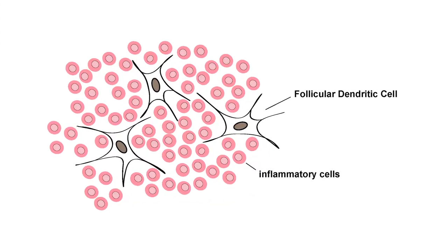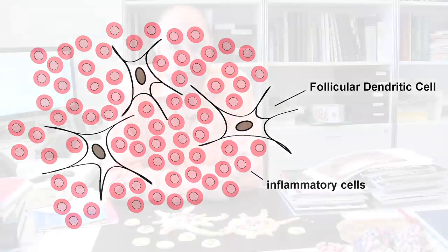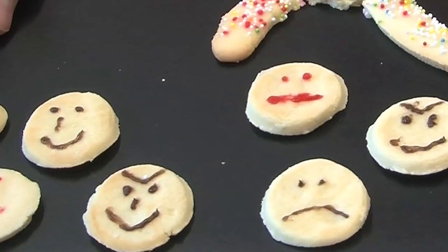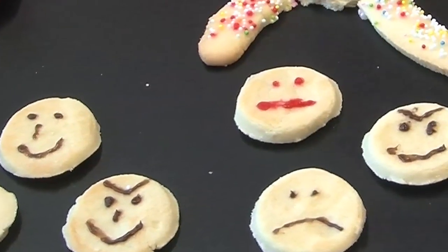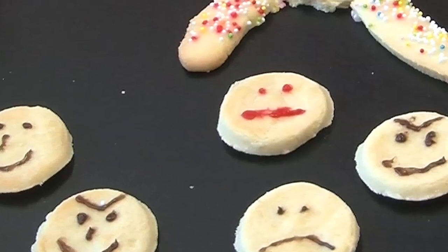In order to visualize the biology of follicular dendritic cells and help you understand what goes on, my little daughter Chiara, who is eight years old, and her friend Haley have prepared some cookies meant to represent follicular dendritic cells and B lymphocytes — the happy guys with happy faces — but also pathogens like HIV and prions, which are the guys with sad or angry faces.